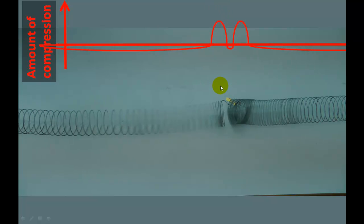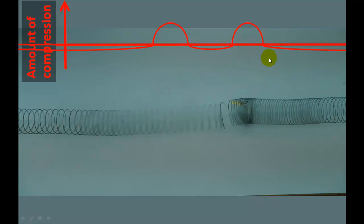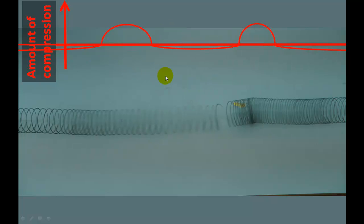And again, each wave travels off in its own direction. They don't bounce off each other. They travel through each other and continue off in their own directions.